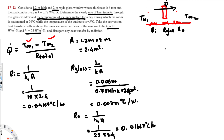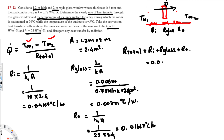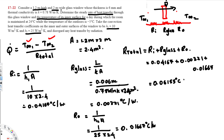Since these resistances are in series, we can directly add them to find R_total. R_total = R_inside + R_glass + R_outside = 0.04167 + 0.00321 + 0.01667 = 0.06155 °C/W.